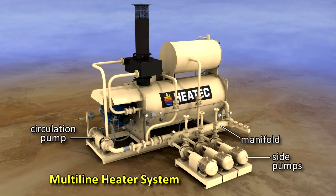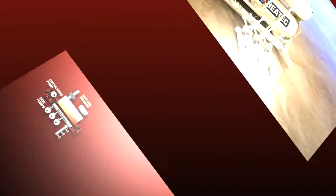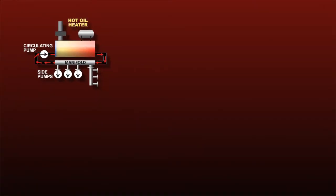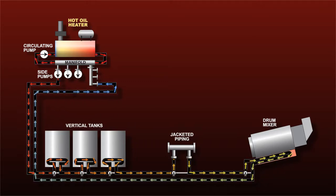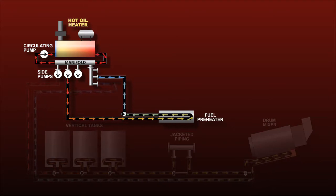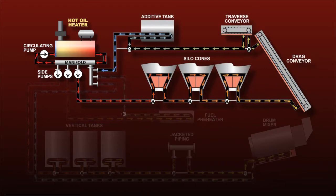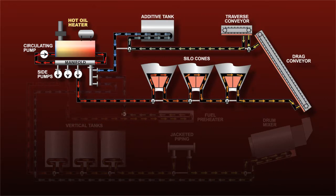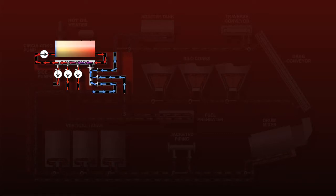This prevents overheating the coil and extends its life. The manifold has outlets and returns for multiple circuits — it can have two to four outlets and returns. Each outlet serves as the hot oil source for an independent circuit with its own side pump. Each side pump circulates the oil through a circuit with less resistance because it has fewer components. After the oil transfers its heat to the components, it returns to the manifold, where it's mixed with the hot oil flowing out of the heater coil and cooler oil returning from other circuits.